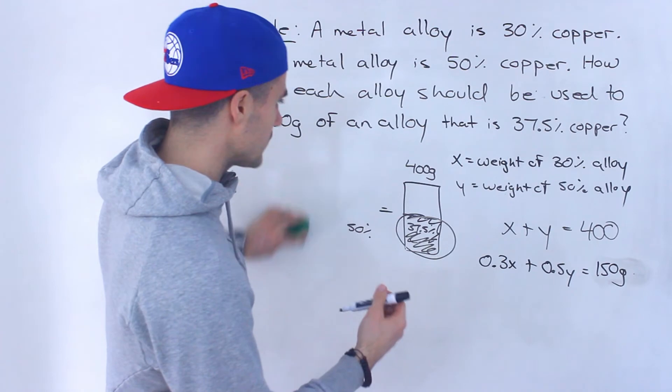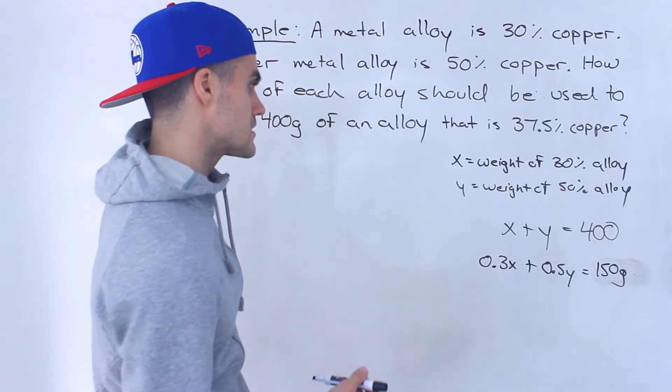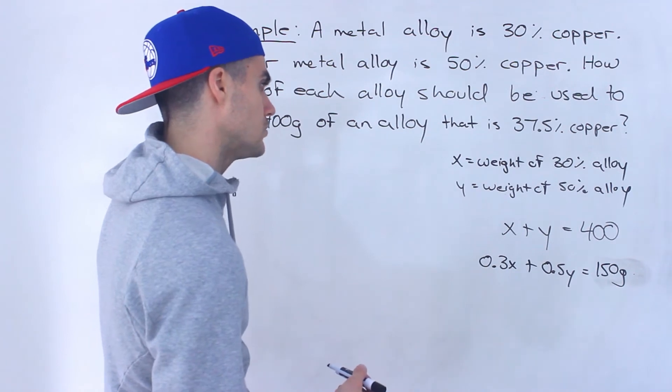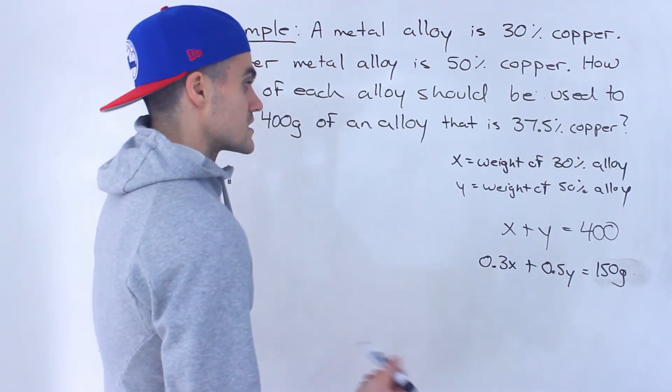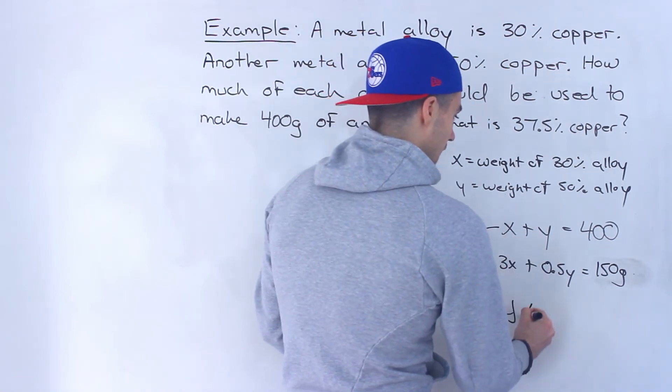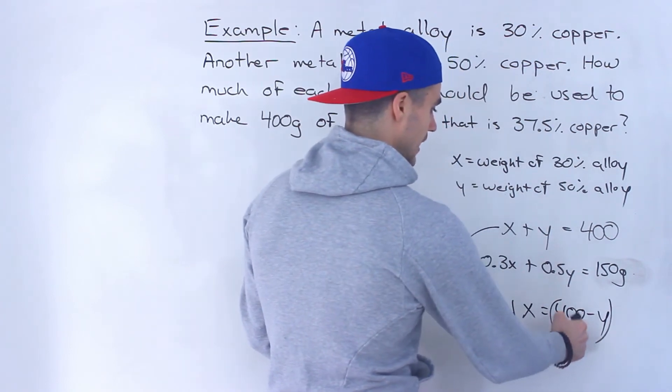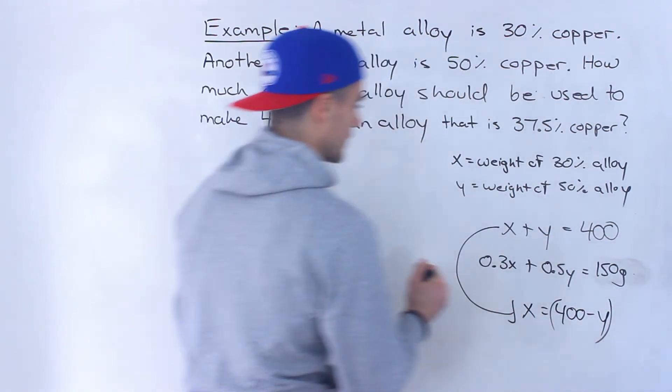And to solve these what I'm going to do is I'm going to use substitution. So what I'll do is I'll actually isolate for the x. So x would be 400 minus y and then I'm going to take that and plug it in for this x value.